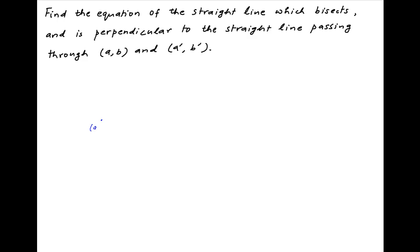We are given two points with coordinates (a, b) and (a', b') respectively. Let's draw a line that passes through these two points.